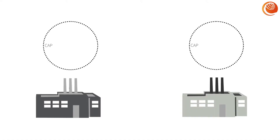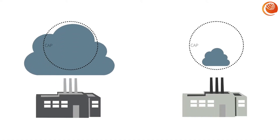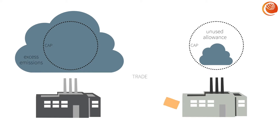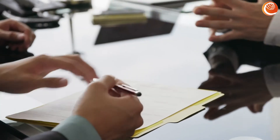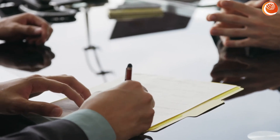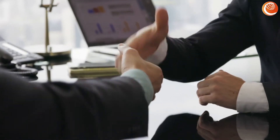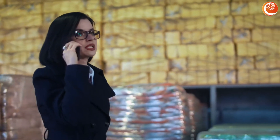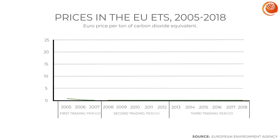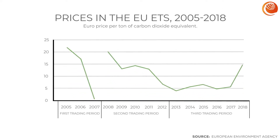If a company produces less than the allowable amount of emissions, they may trade or sell their allowances to other companies or save them for the next period. If, however, the company produces more emissions than the allowances permit, they must procure additional allowances by purchasing or trading them with other companies, or they must pay a financial penalty. As companies may trade, sell, and buy emission allowances, a price on carbon is created, which responds to market signals of supply and demand.